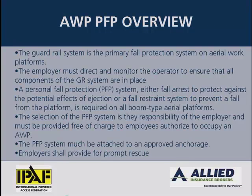The guardrail system is the primary fall protection system on an aerial work platform. Employers must direct and monitor operators to ensure that all components of the guardrail system are in place. A personal fall protection system — either fall arrest to protect against the potential effects of ejection, or fall restraint to prevent a fall from the platform — is required on all boom-type aerial work platforms. The selection of the personal fall protection system is the responsibility of the employer and must be provided free of charge. The system must be attached to an approved anchorage, and the employer shall provide for prompt rescue.